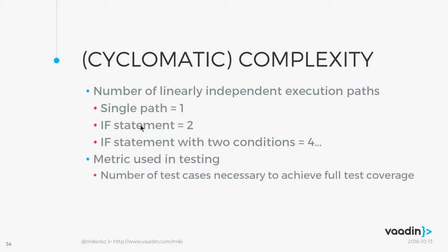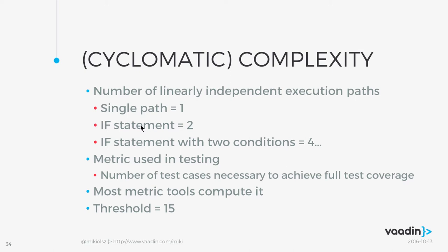Cyclomatic complexity is closely related to testing — it represents the number of test cases required to achieve full test coverage. It's a basic but very common metric and is implemented by default in most quality metric tools. There is a threshold: when your code exceeds a cyclomatic complexity of 15, you should be concerned. A few years ago the threshold was still 10, but as system complexity has increased, the threshold has been pushed higher.